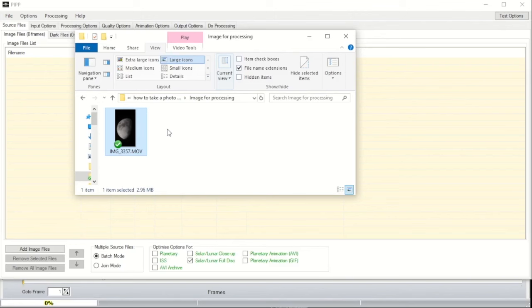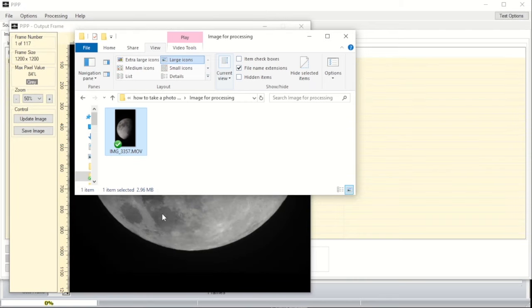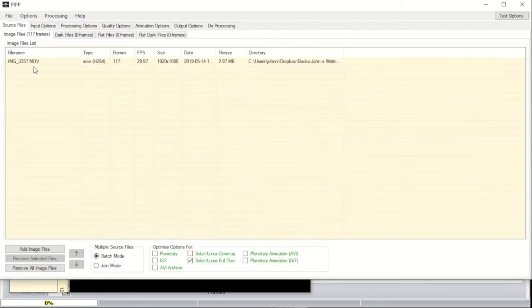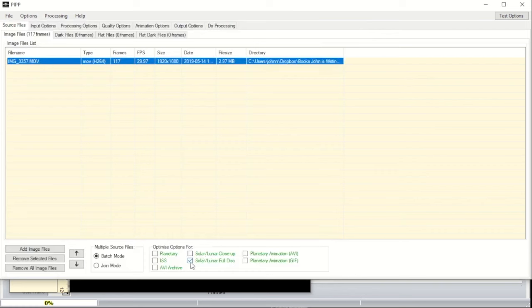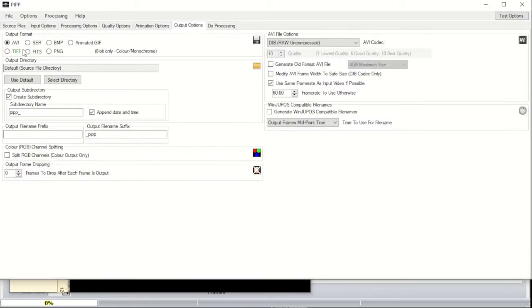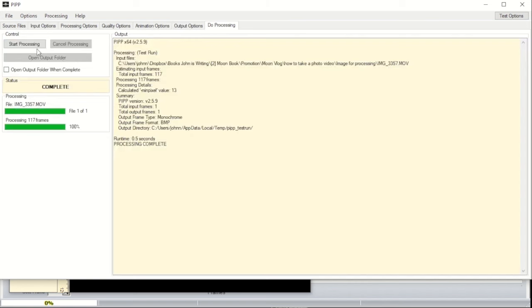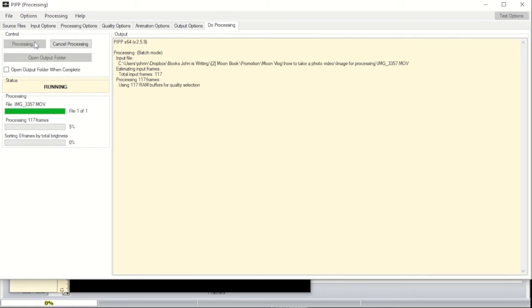Once you've transferred the video file from your iPhone to the computer, drag and drop the file into a program called PIPP. Once in the program, select solar lunar full disk, go to the output, select AVI, select do processing and start processing. This will convert the movie file from the iPhone into an AVI file that the stacking software, which we'll get to in a minute, can read.